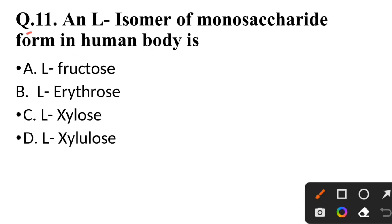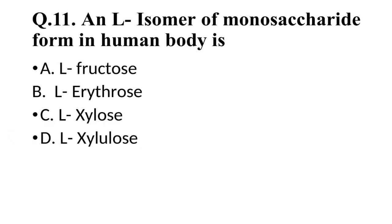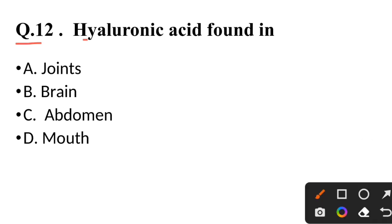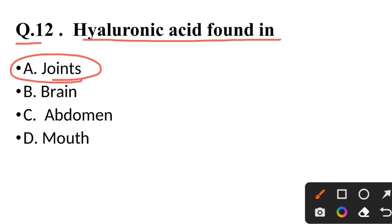Question 11: All L-isomers of monosaccharides formed in the human body — correct answer is L-xylulose. Question 12: Hyaluronic acid is found in — correct answer is joints.